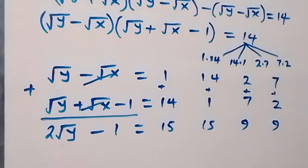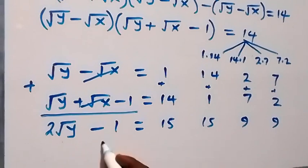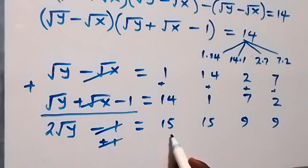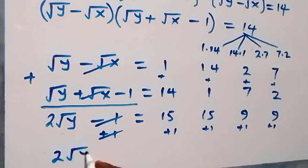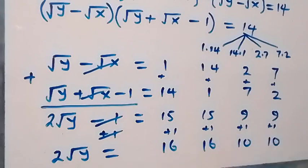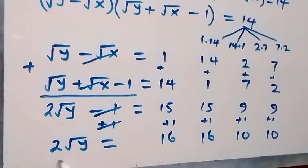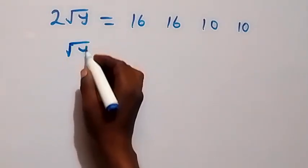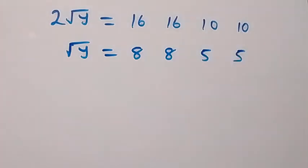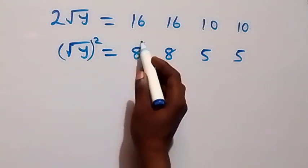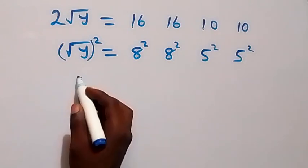Now, to remove the minus 1, let's add 1 on both sides. The minus 1 cancels and we add 1 on the right side as well. What we now have is 2√y equals: 16, 16, 10, and 10. Then to remove the 2 we divide both sides by 2, so √y equals: 16÷2 = 8, 8, and 10÷2 = 5, 5.